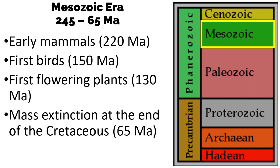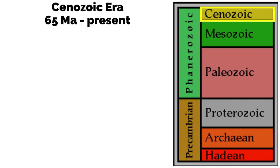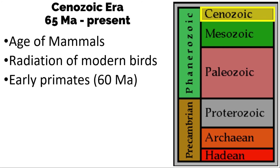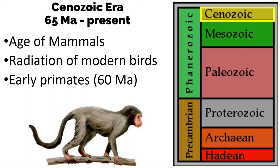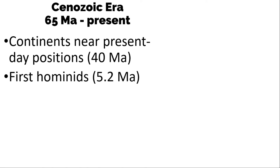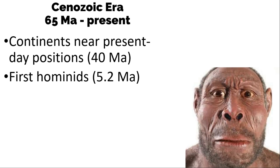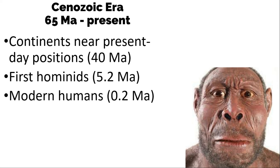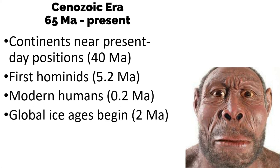This event marks the end of the Cretaceous Period. Now let's go to the Cenozoic Era, from 65 MA to the present — called the Age of Mammals. There is radiation of modern birds, and early primates are present at 60 MA. The continents are near their present-day positions, similar to around 40 MA. The first hominids appeared at 5.2 MA. Hominids are the group consisting of all modern and extinct great apes — modern humans, chimpanzees, gorillas, and orangutans, plus their immediate ancestors. At 0.2 MA, modern humans occurred, and at 2 MA, global ice ages began.